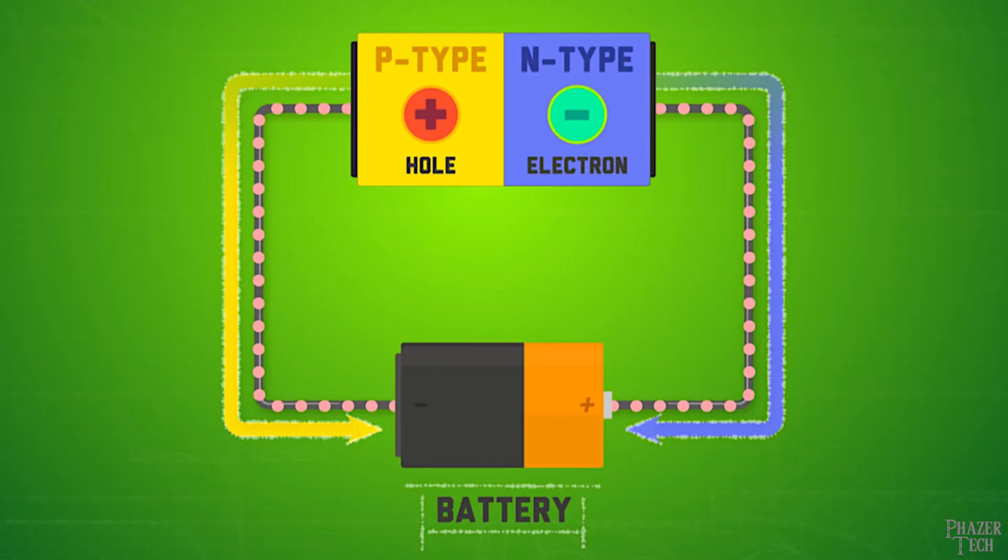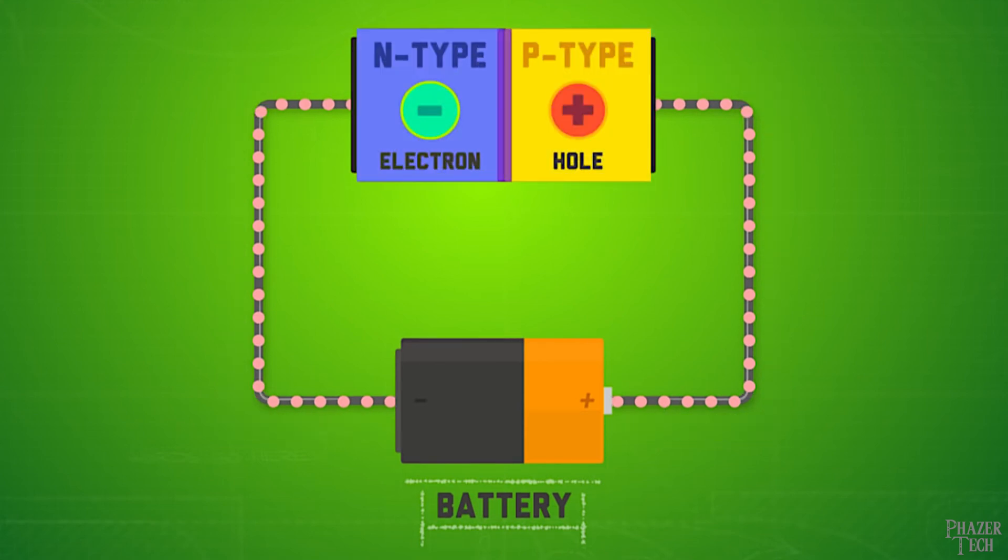To illustrate this, let's imagine a current is flowing from this battery. Now if we combine n-type and p-type semiconductors together and arrange them so that the n-type is connected to the battery's positive terminal and the p-type is connected to the battery's negative terminal, this will stop the current from flowing. But if we were to flip these around so that the n-type is connected to the negative terminal and the p-type is connected to the positive terminal, then current is allowed to flow. This simple configuration is what's known as a diode.